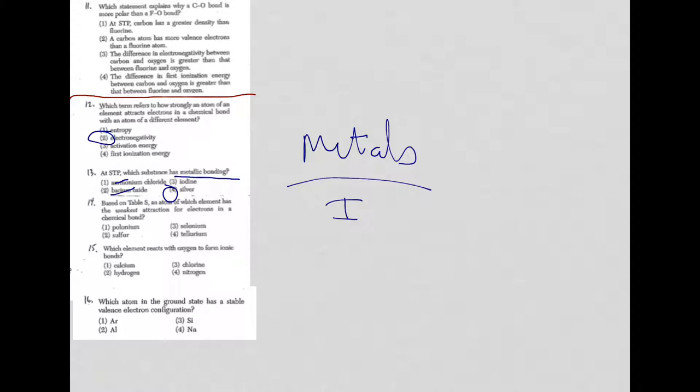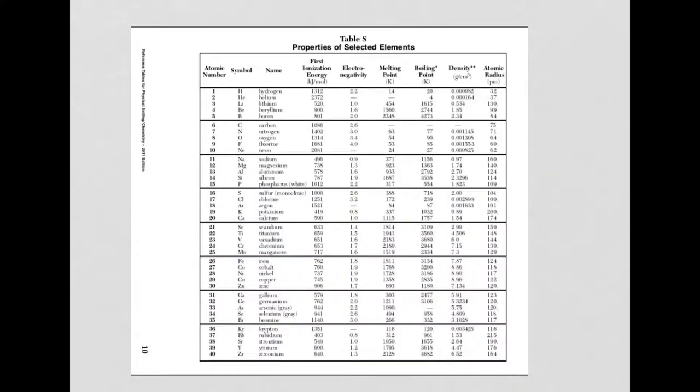All right, now question 14. Based on table S, an atom of which of the elements has the weakest attraction for electrons in a chemical bond? Once again, we're dealing with electronegativity. But in this case, the weakest attraction means it's going to be the lowest value. And what you're going to do is you're going to go to reference table S and look up every single one of these. Don't not do that. Because when you do and you skip steps and you think you kind of just got it, you don't.